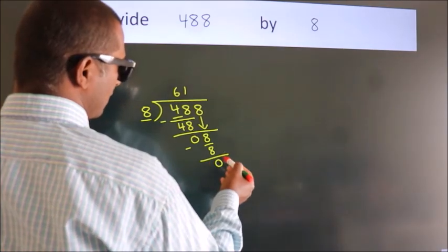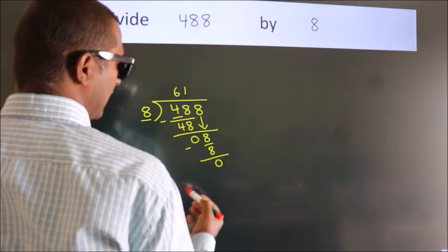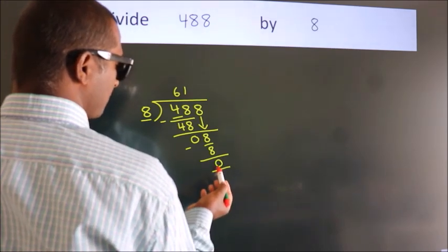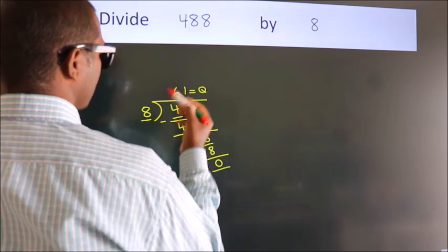After this, no more numbers to bring down. We got remainder 0, so this is our quotient: 61.